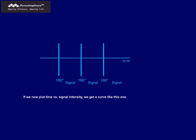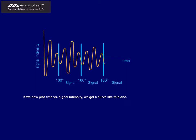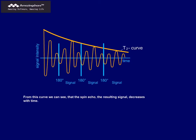If we now plot time versus signal intensity, we get a curve like this one. A curve connecting the spin echo intensities is the T2 curve. From this curve, we can see that the spin echo, the resulting signal, decreases with time.